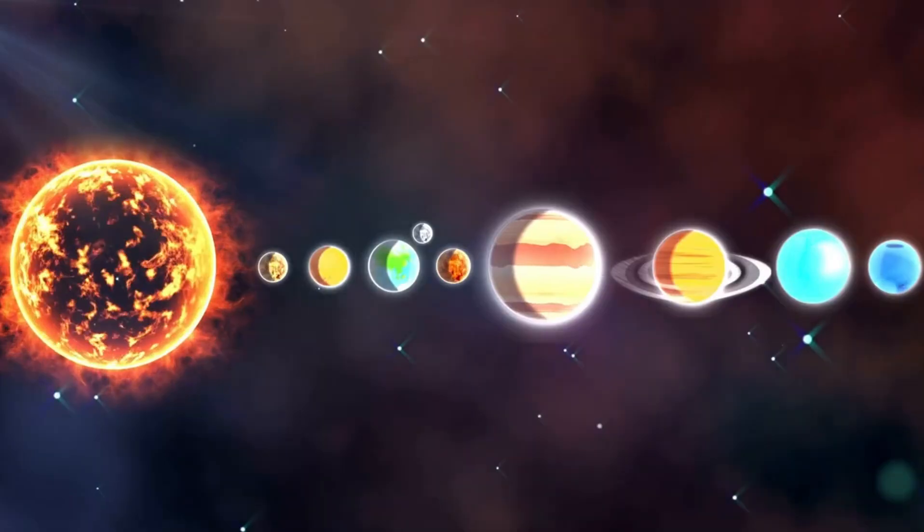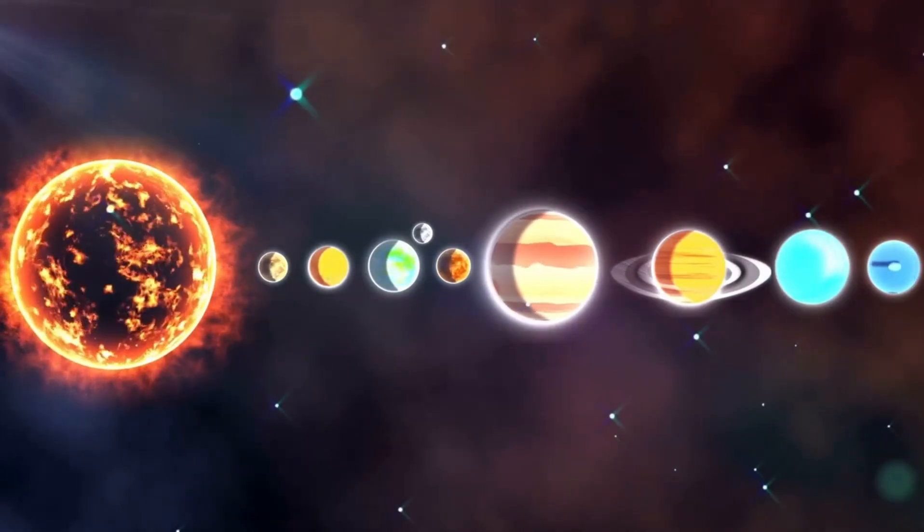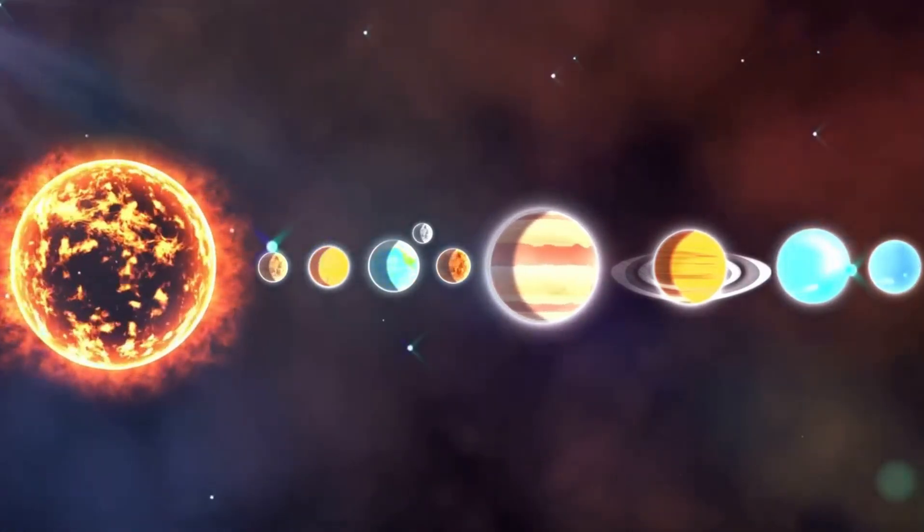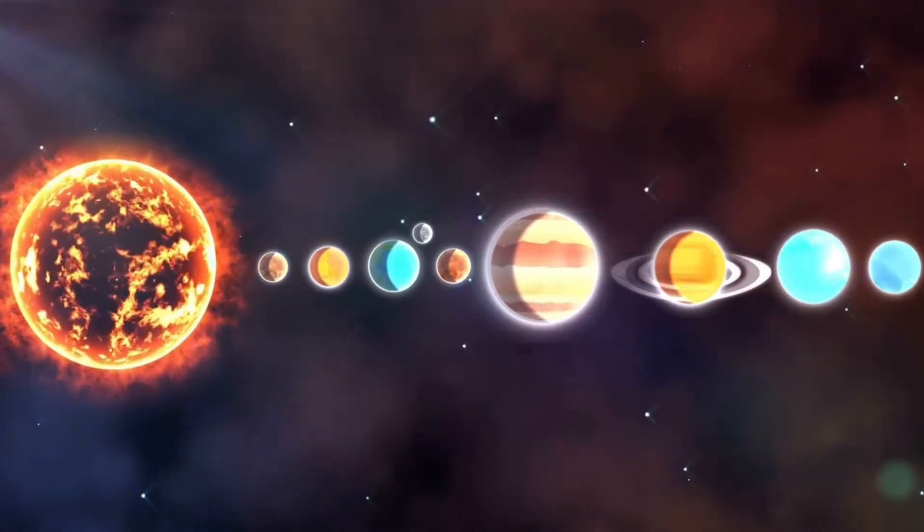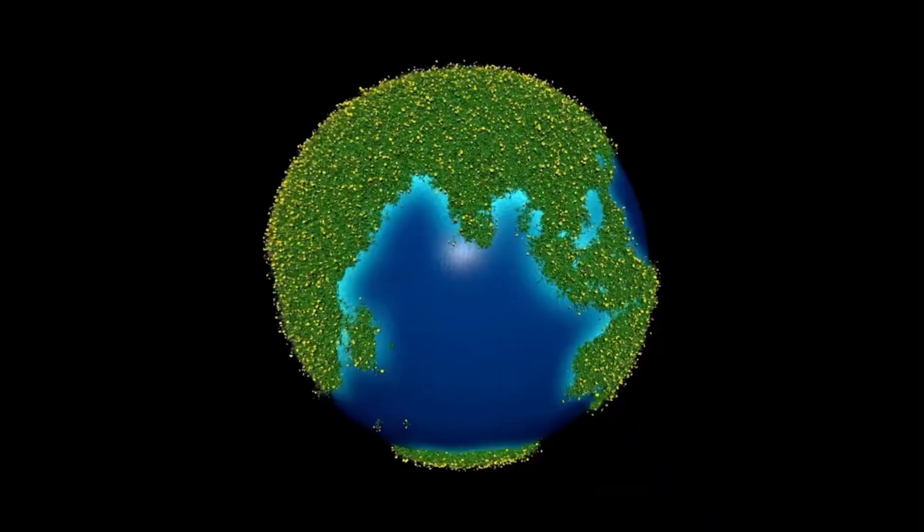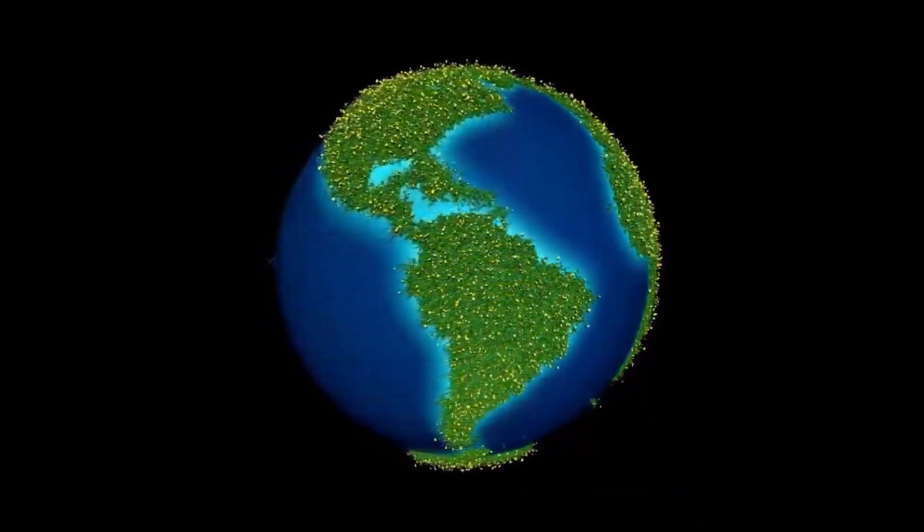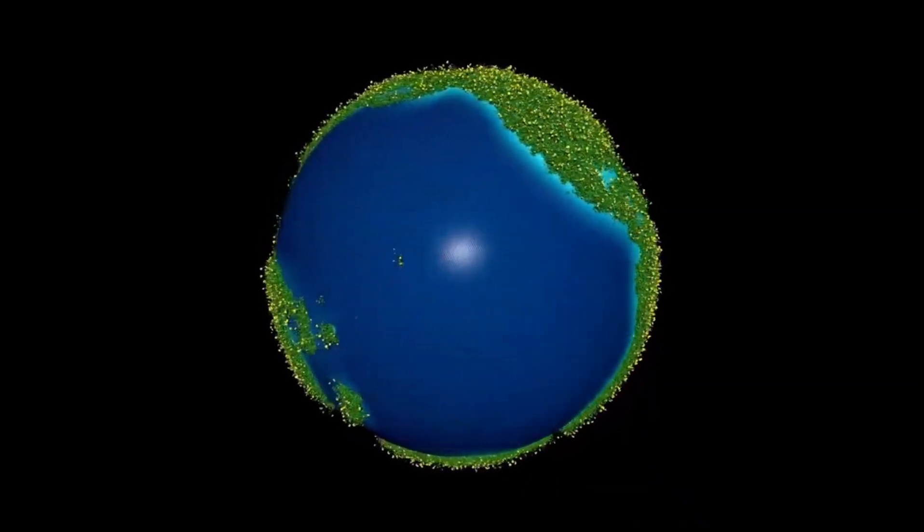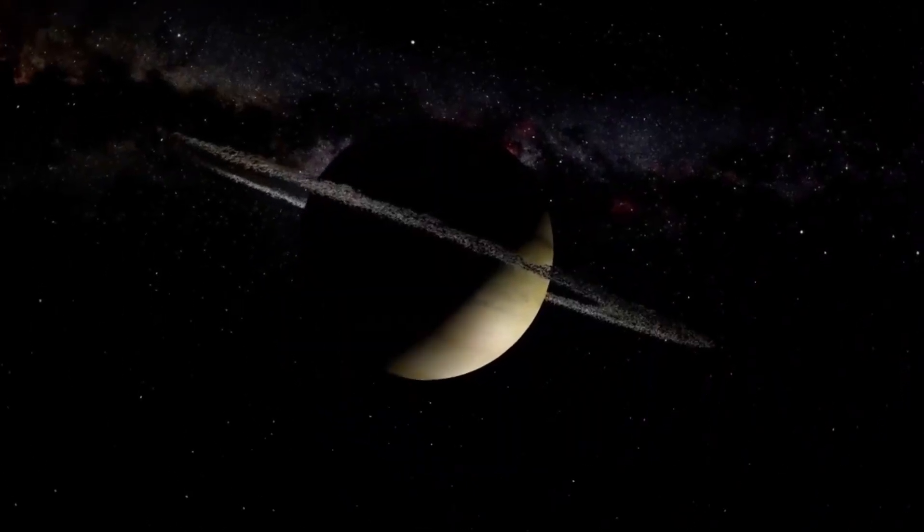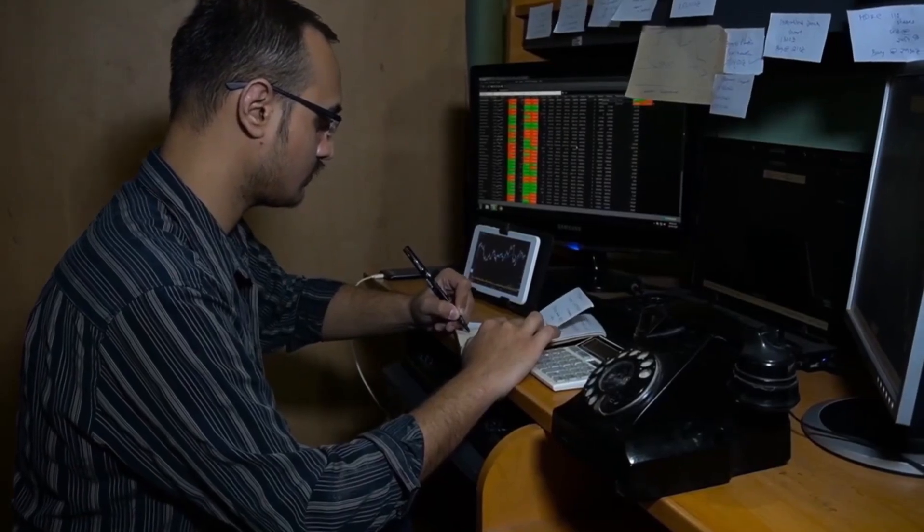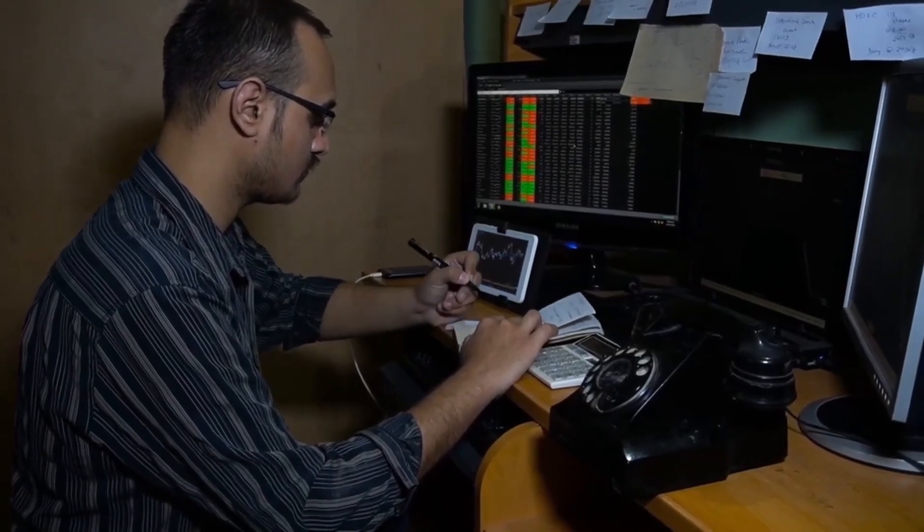Superhabitable planets may exist in other parts of the galaxy, and they could have even more favorable conditions for supporting life than Earth. While Earth is currently the only known planet that harbors life, it may not be the best example of a life-supporting planet. There could be planets that offer better physical and chemical conditions, allowing for more diverse or complex life forms. The discovery of these superhabitable worlds would represent a new frontier in our understanding of planetary habitability.